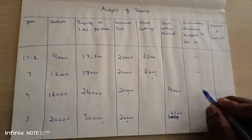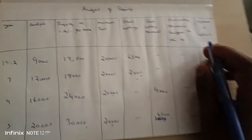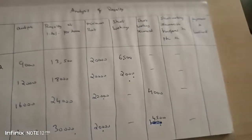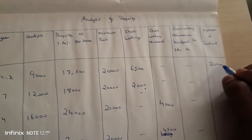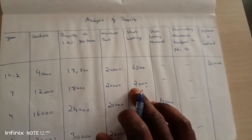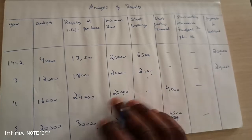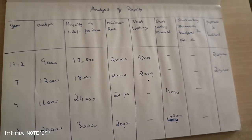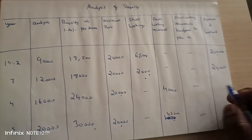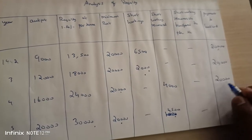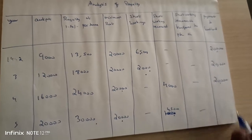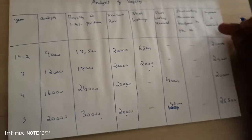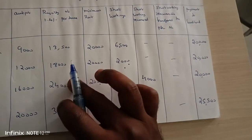Short working transferred to profit and loss account: we don't have any balance remaining. Payment to landlord: Year 1 — royalty Rs. 13,500, short working Rs. 6,500, payment to landlord Rs. 20,000. Year 2 — royalty Rs. 18,000, short working Rs. 2,000, payment Rs. 20,000. Year 3 — royalty Rs. 24,000, short working recovered Rs. 4,000, payment Rs. 20,000. Year 4 — royalty Rs. 30,000, short working recovered Rs. 4,500, payment Rs. 25,500. In payment to landlord, compare royalty with short working and short working recovered.